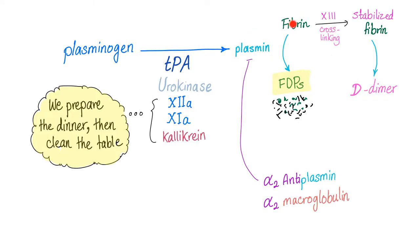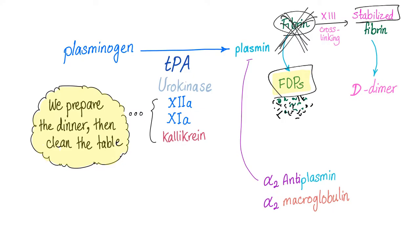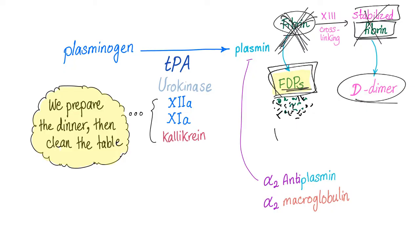Fibrin is stabilized into stabilized fibrin thanks to cross-linking by the great fibrin stabilizing factor, also known as factor 13. Plasminogen is converted into plasmin thanks to TPA and urokinase, but there are other activators: factor 12a, factor 11a, and kallikrein. Plasmin will destroy fibrin into fibrin degradation products, and will destroy stabilized fibrin into D-dimer. The end product of fibrin destruction is the fibrin degradation products, also known as fibrin split products or FDP. The end product of stabilized fibrin destruction is the D-dimer.